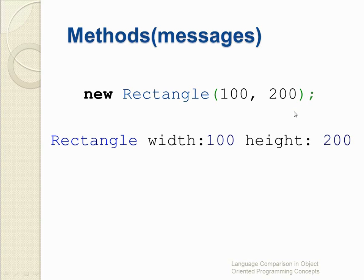But by contrast in Smalltalk, this code would be written as: Rectangle width: 100 height: 200. The receiver in this case is the Rectangle class, and the result will be a new instance of the class with the specified width and height. In Smalltalk, all methods are supposed to be public. Methods or messages are invoked as late bound. Objects obviously communicate by message passing in Smalltalk.